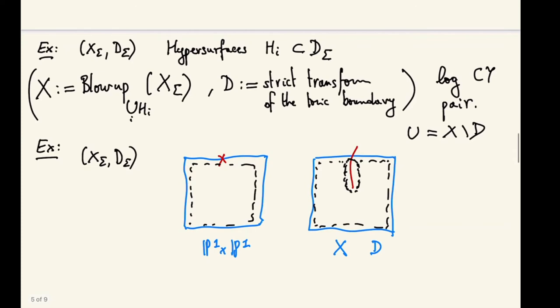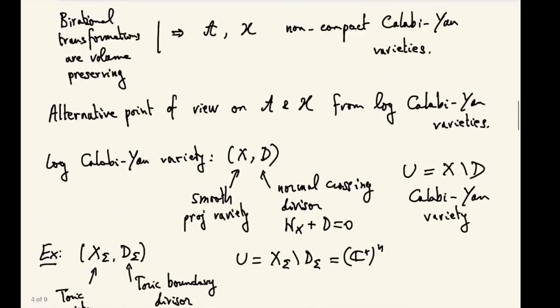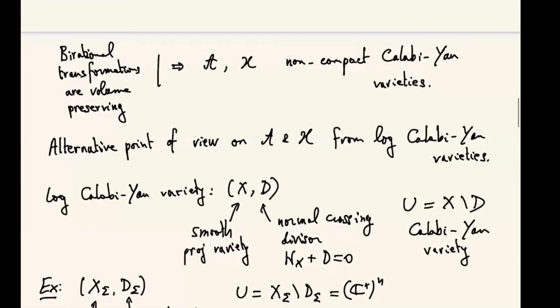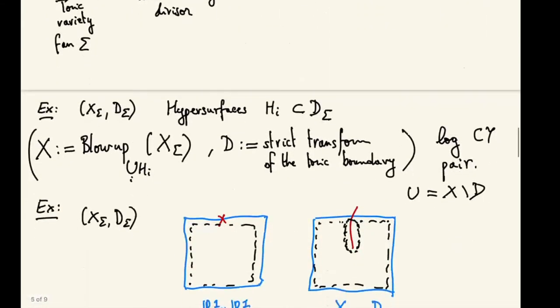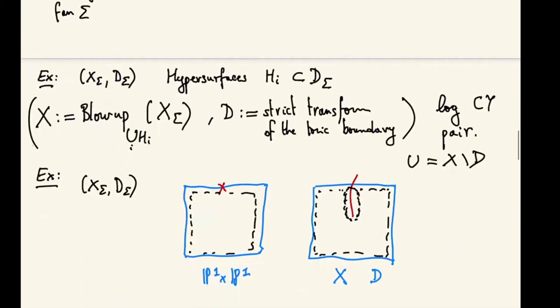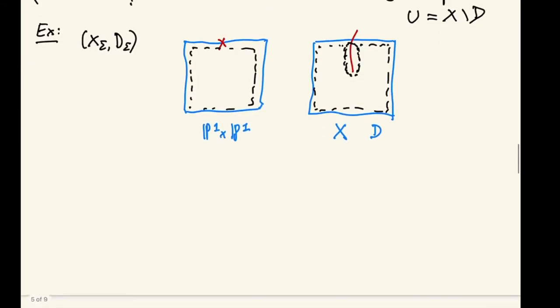For this example, the complement U = X minus D is no longer (C*)^n but something slightly more complicated. The complement consists of (C*)^2, which was already there as the torus in the toric variety, plus a copy of A^1, which is the exceptional divisor minus the point where it intersects the boundary. The point of this is that cluster varieties A and X can be described explicitly as complements U = X minus D for log Calabi-Yau pairs (X, D) obtained exactly in this way as blow-ups of toric varieties.